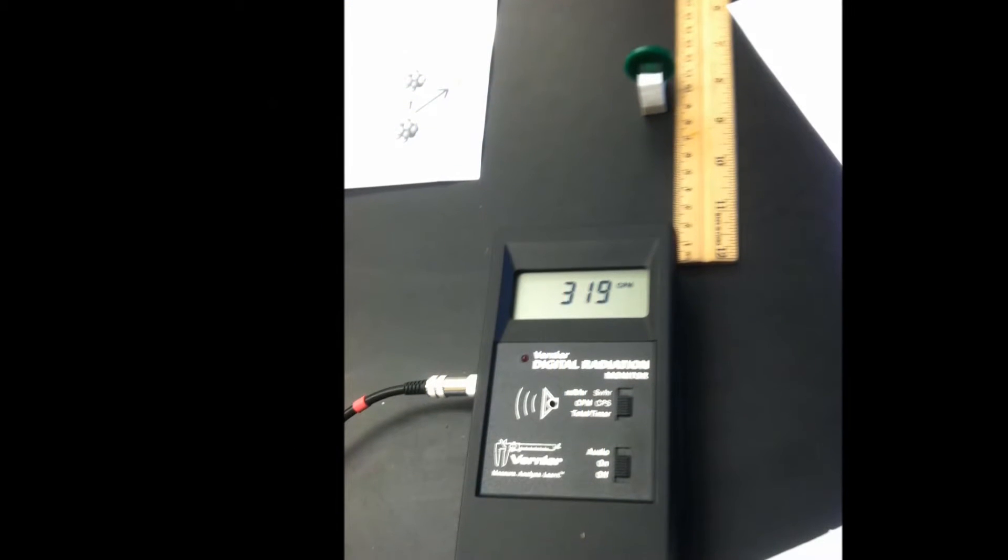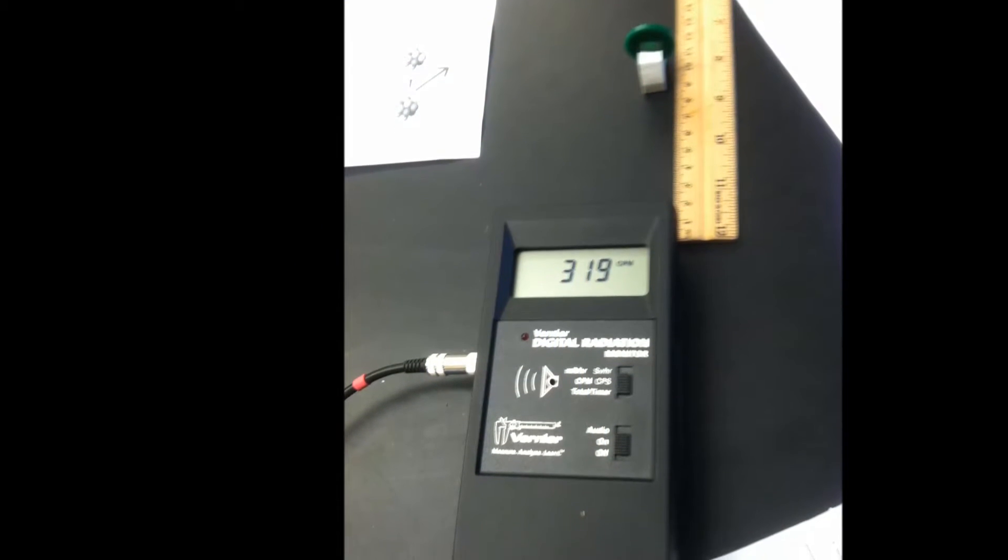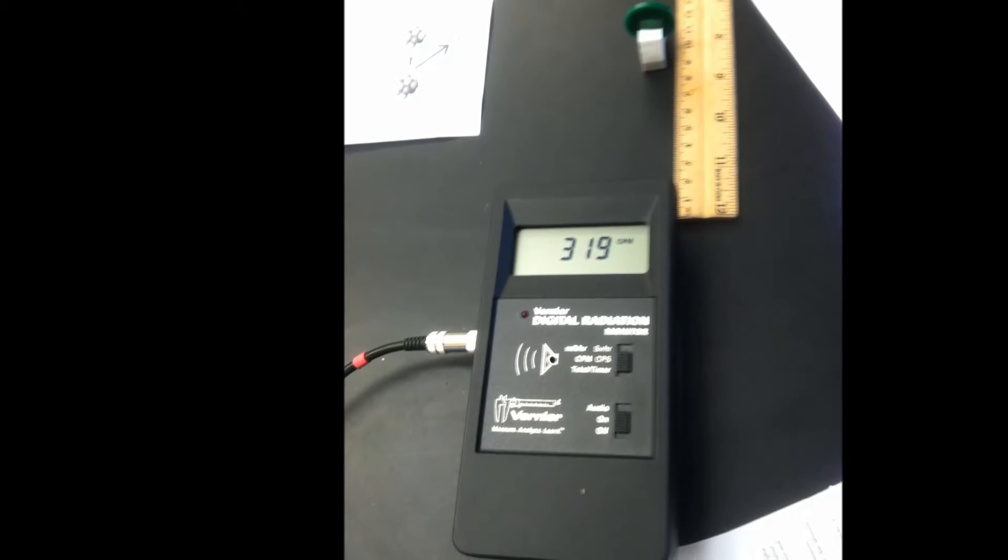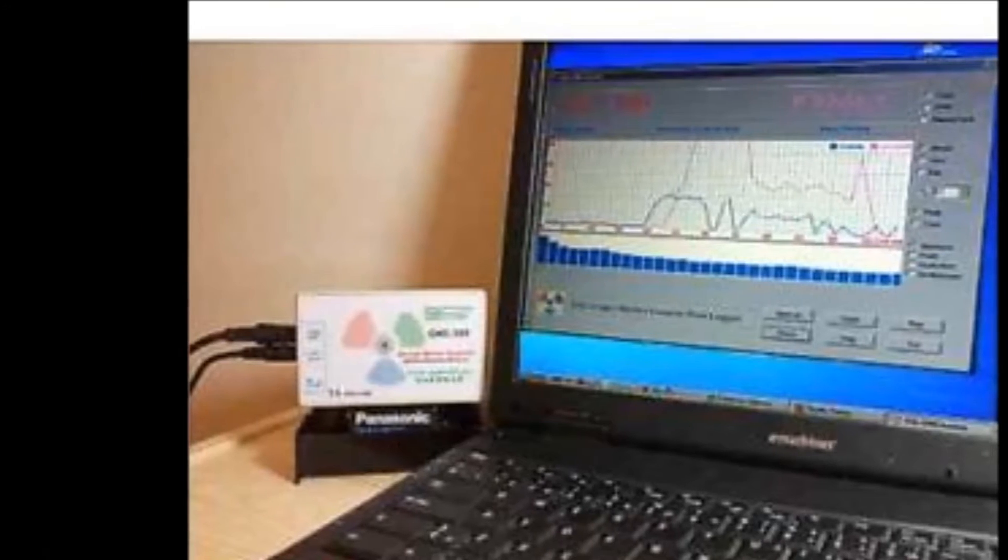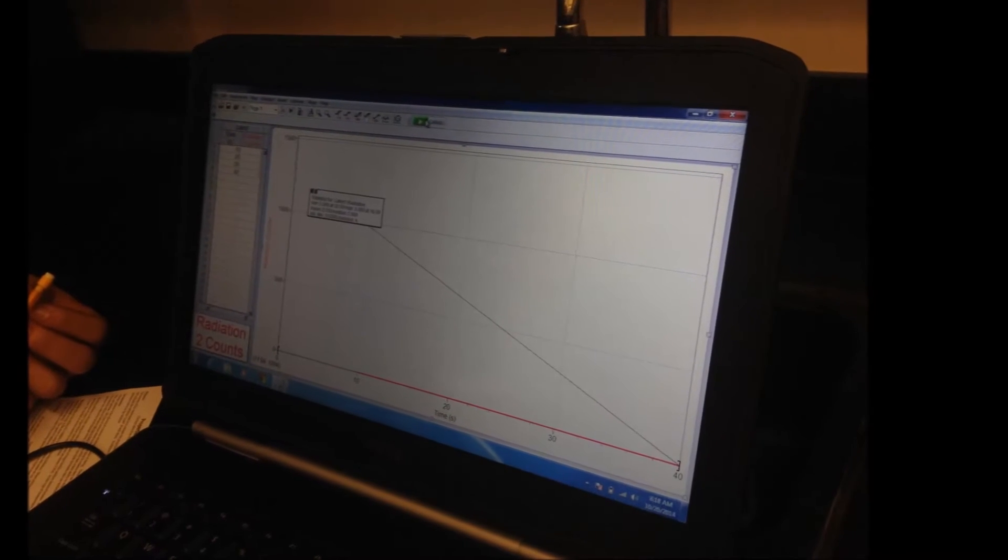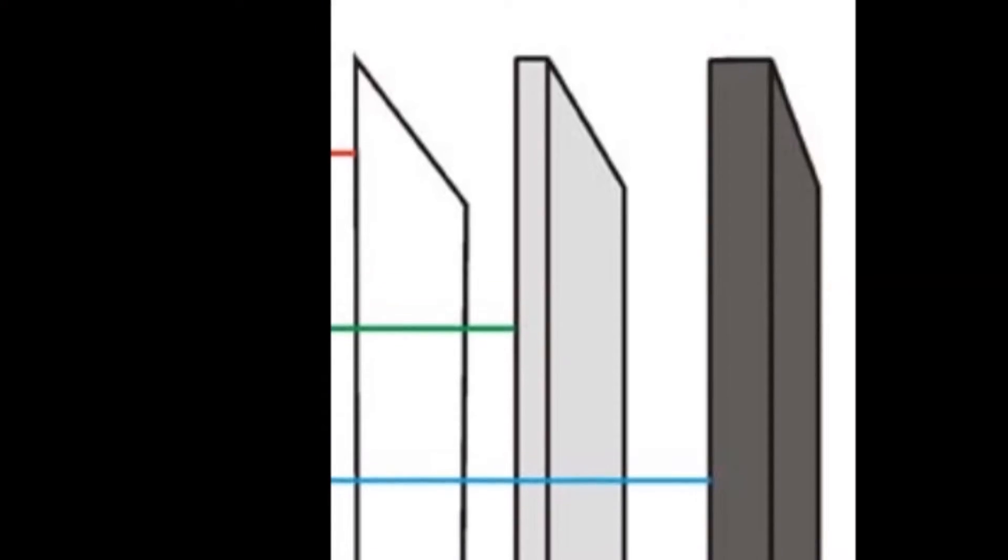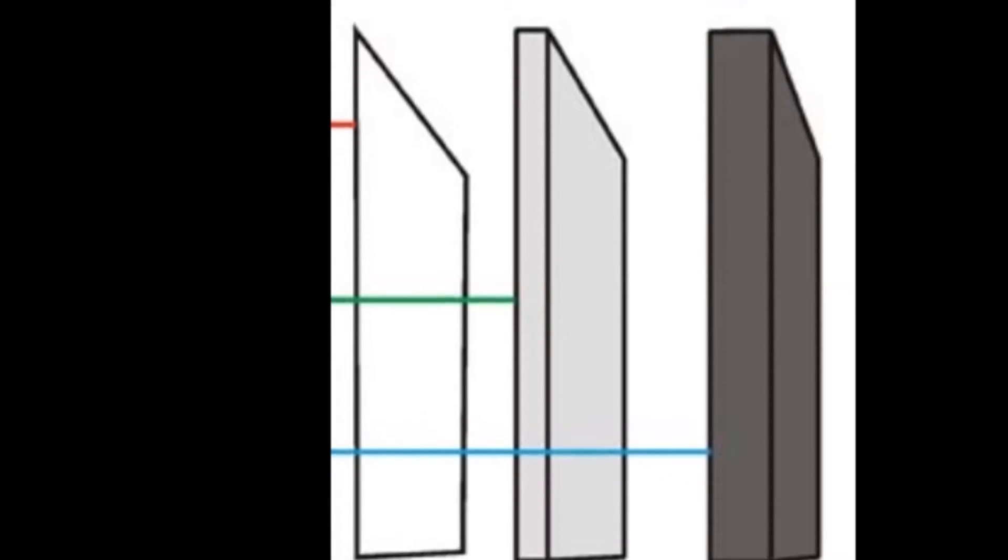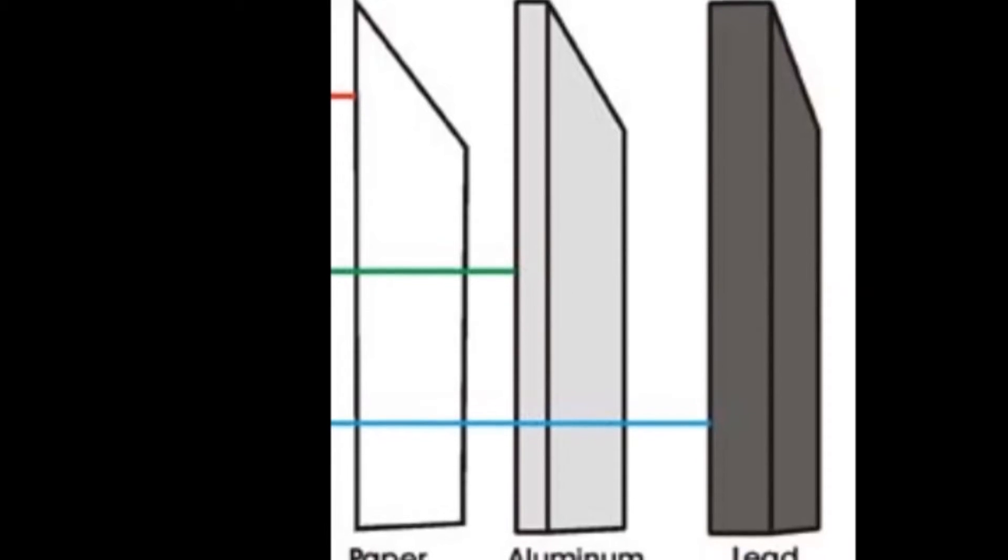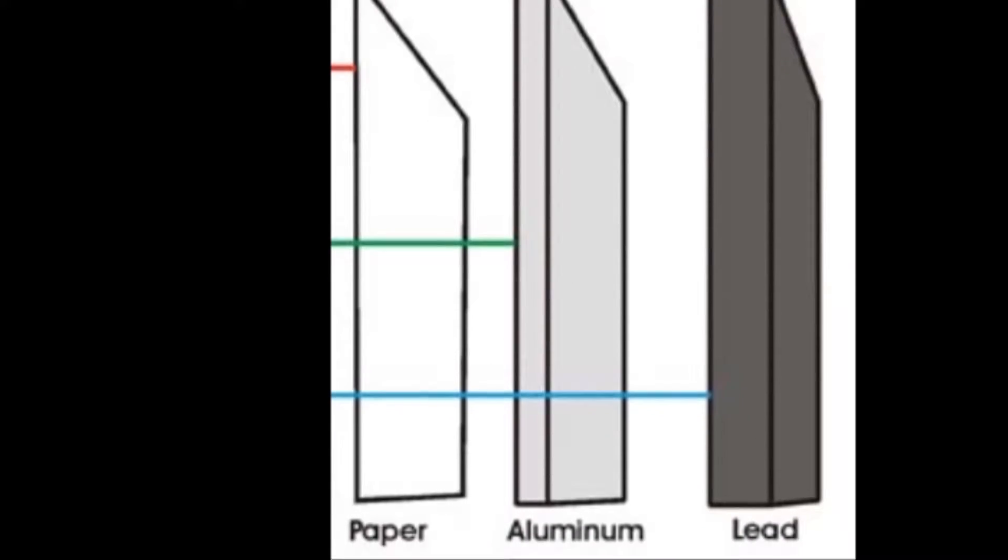To perform the lab, we used a Geiger-Muller radiation detector, an instrument that detects and measures the intensity of radiation, a laptop, the Logger Pro computer program, the three radiation source disks, three different shielding materials—paper, aluminum, and lead—a ruler, and a data table.